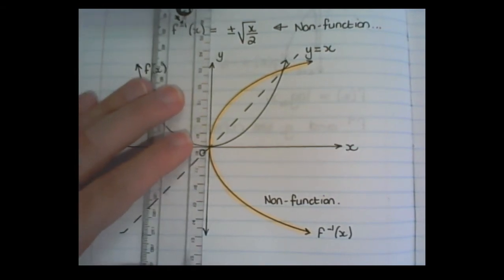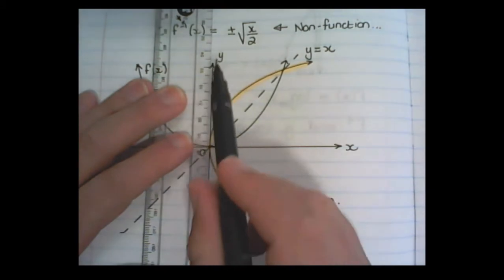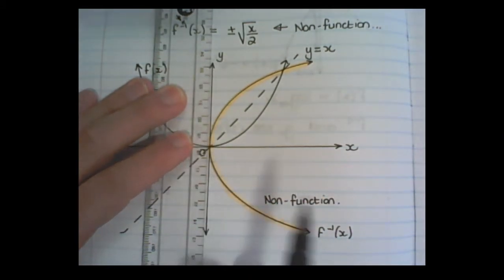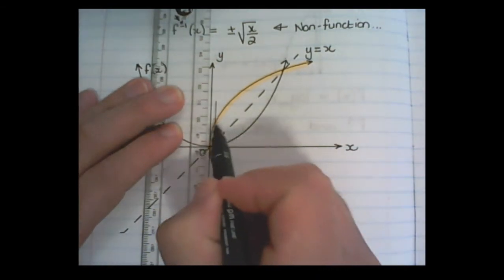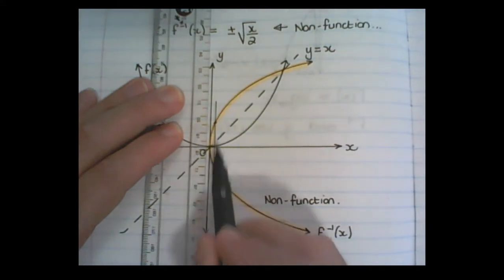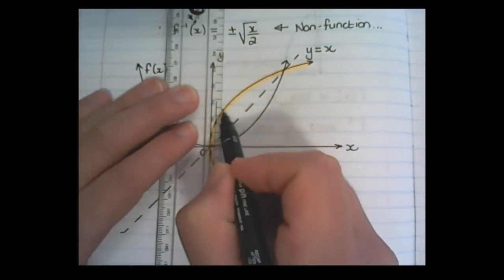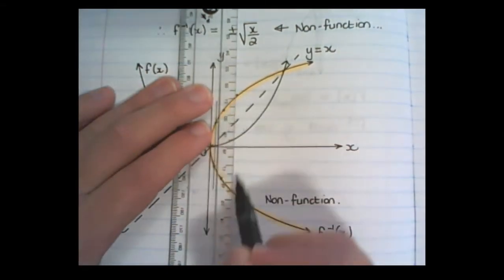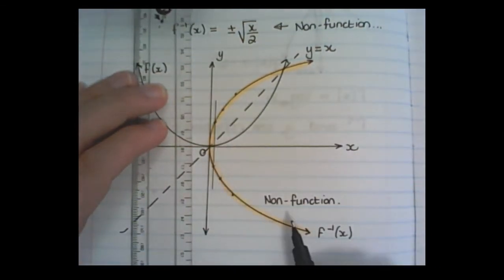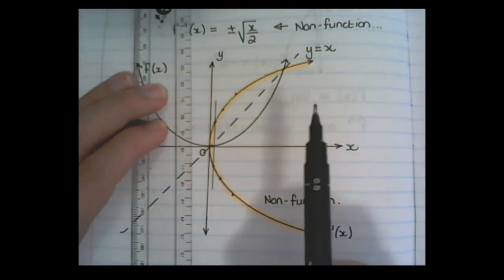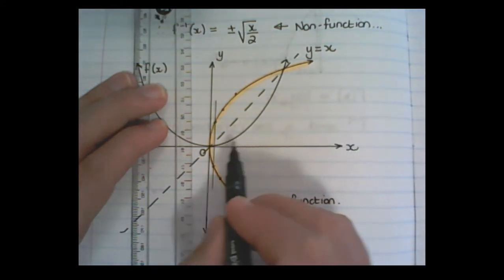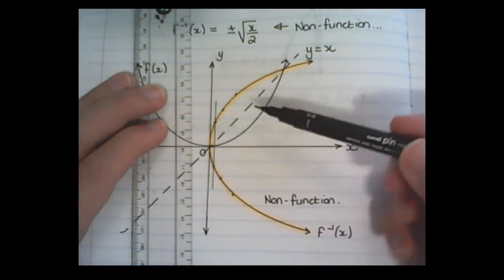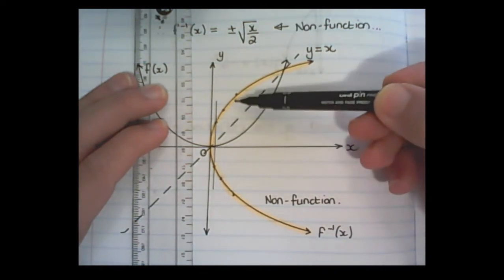The reason why this is a non-function is because it doesn't satisfy the vertical line test. The vertical line test is: if I take a line parallel to the y-axis and it passes through the inverse function at two or more places, then that is a non-function. Remember the definition of a function: for every value in x, there is supposed to be one value in y. But in this case, for a value in x, there are two possible values in y.